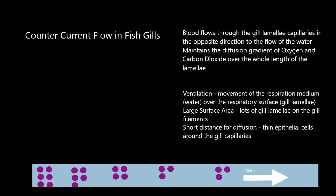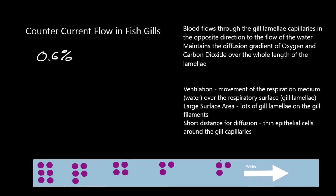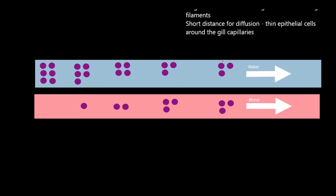The problem the fish has is that the percentage of oxygen in the water is about 0.6%, which means there is a very low partial pressure of oxygen. If we look at what happens when you have concurrent flow — that is when the water flows in the same direction as the blood — the blood is returning from the rest of the fish's body where oxygen has been consumed in the mitochondria and turned into water. This has reduced the partial pressure of oxygen in the tissues and therefore in the blood, because oxygen has come out of the blood and diffused into the tissues. The blood then returns through the heart and is pumped through the gill capillaries.